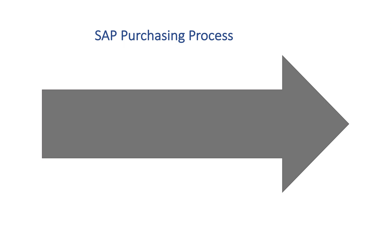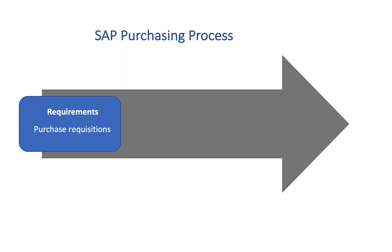The first step is to determine the requirements. What material do we need? How much of it? And when do we need it? These key factors need to be determined. Materials requirements can be determined by individuals in departments with need or by materials planning and control. These requirements are communicated internally to the purchasing group via purchase requisitions.